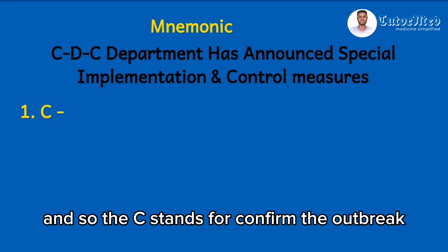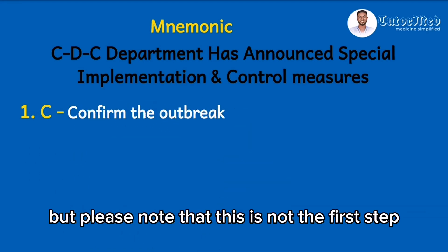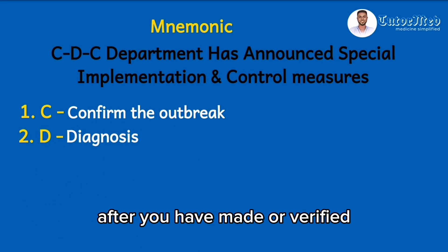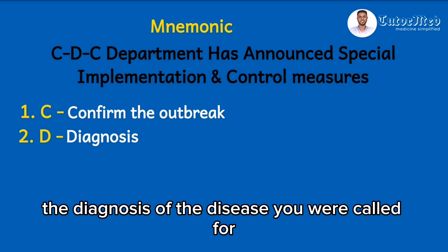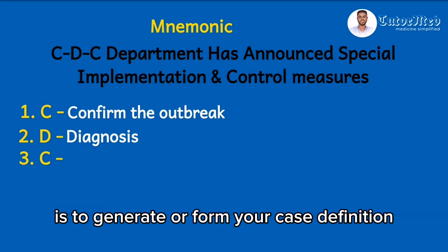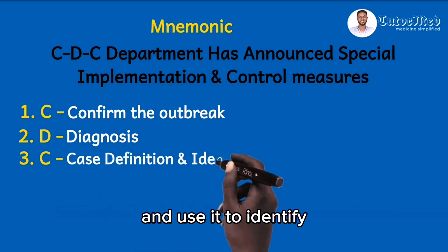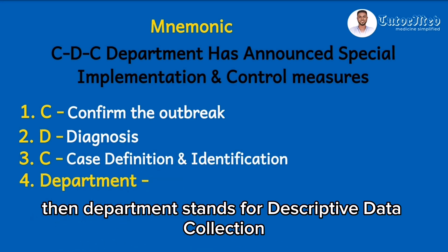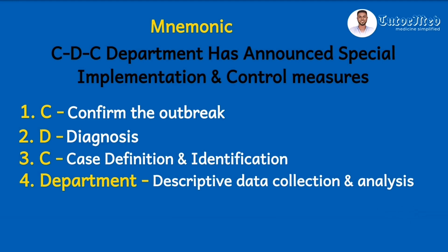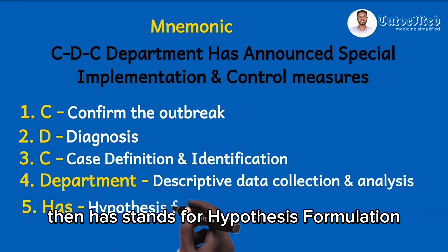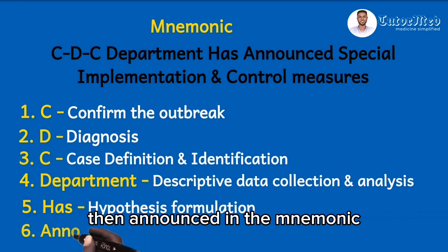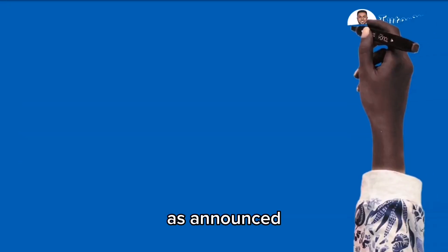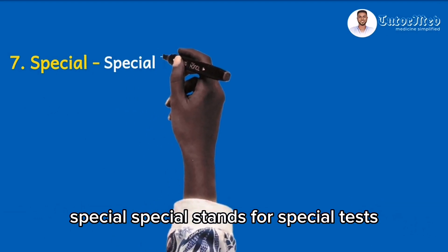The C stands for confirm the outbreak — but please note that this is not the first step. The D is diagnosis — make a diagnosis. Confirm the outbreak after you have made or verified the diagnosis of the disease. Then the third C in CDC is to generate or form your case definition and use it to identify other cases of the disease in the investigation. Then 'department' stands for descriptive data collection and analysis. Then 'has' stands for hypothesis formulation. Then 'announced' in the mnemonic stands for analytical studies to test the hypothesis.